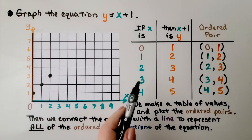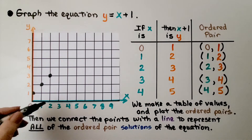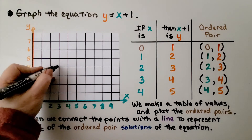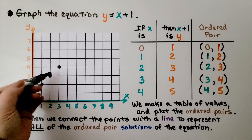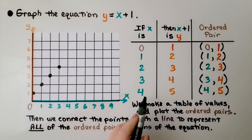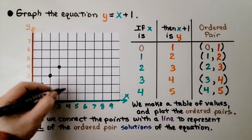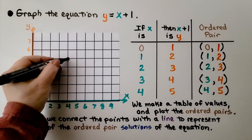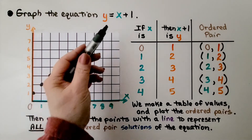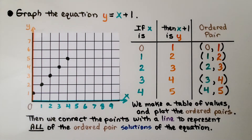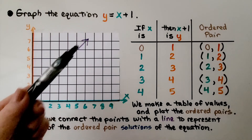Same with x equals 3 — we add 1, so y is going to be 4. We have the ordered pair 3, 4. If we have x equals 4, we add 1 and y will be 5. We have the ordered pair 4, 5. We can keep making more ordered pairs. Once we have all the ordered pairs, we plot them, then connect the points with a line to represent all of the ordered pair solutions of the equation. We have our line drawn through each of the points.